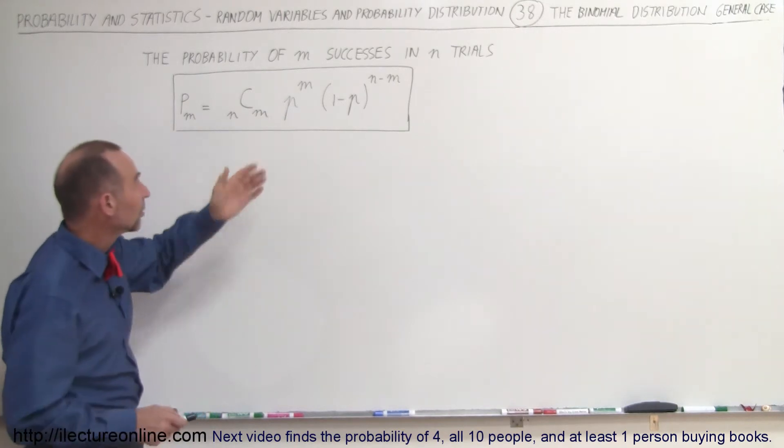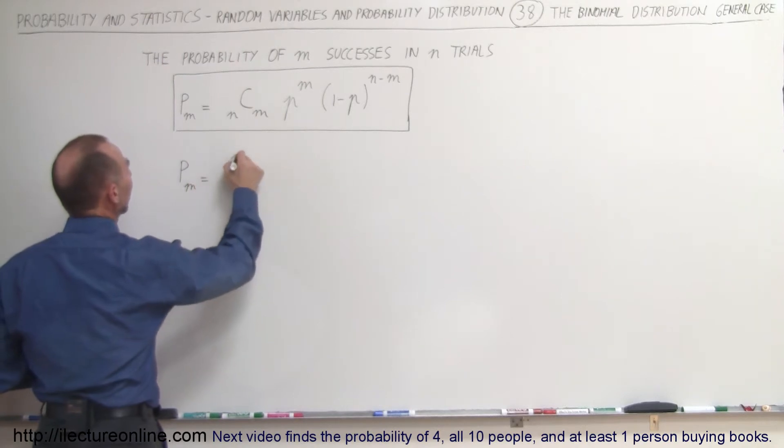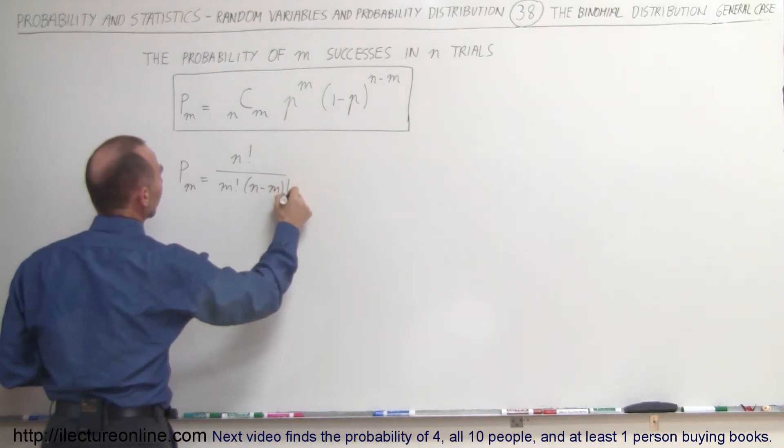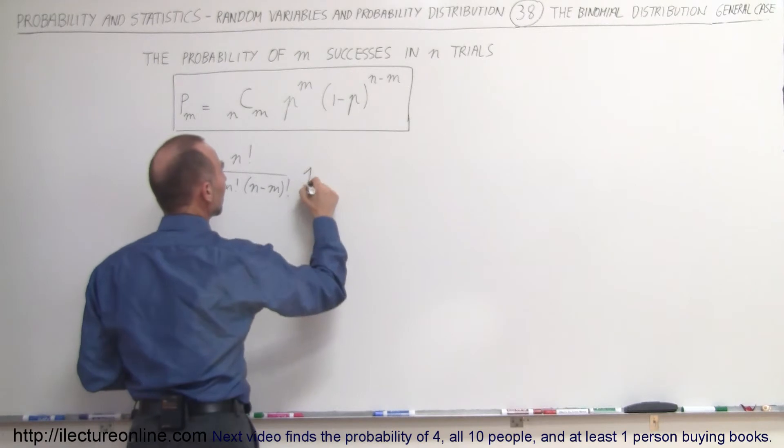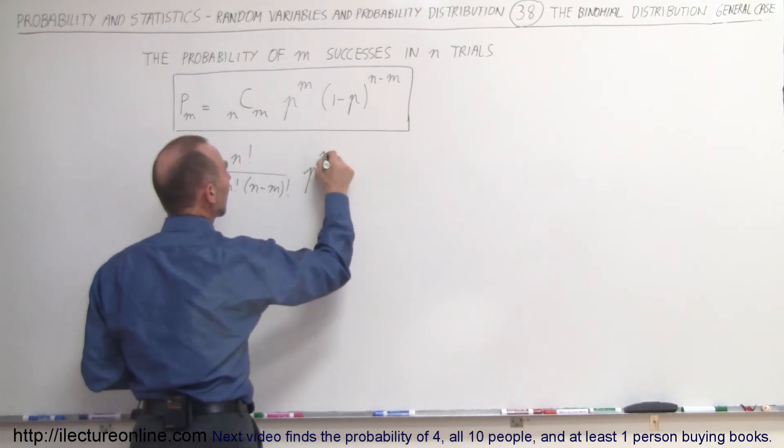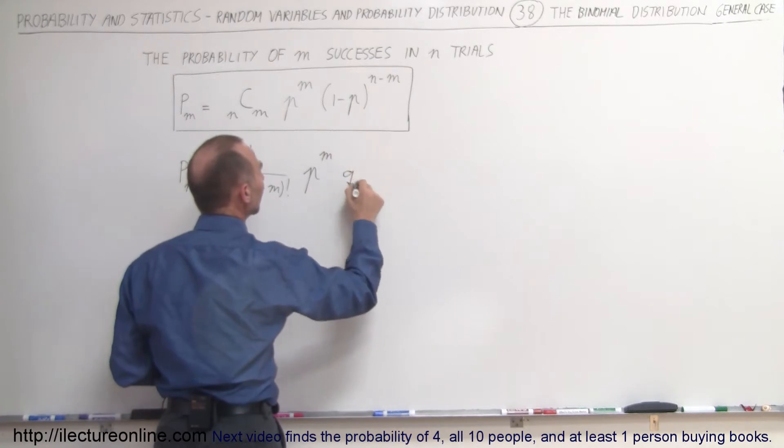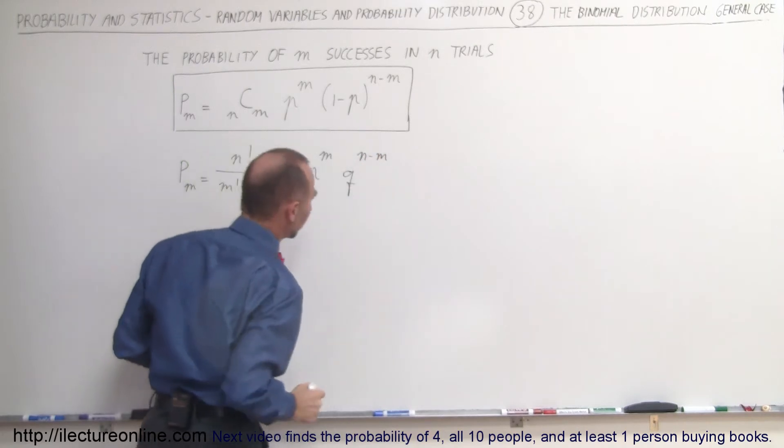To understand what this equation really means we can rewrite it. P sub m equals n factorial divided by m factorial times n minus m factorial, times the probability of success to the m power, times the probability of failure to the n minus m power.